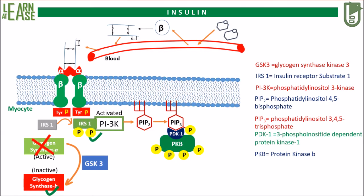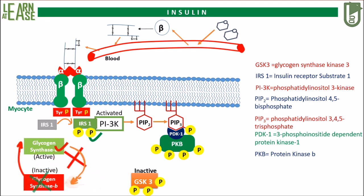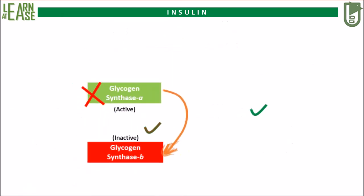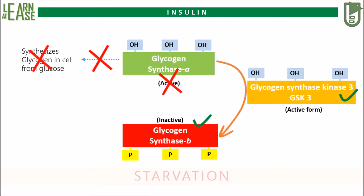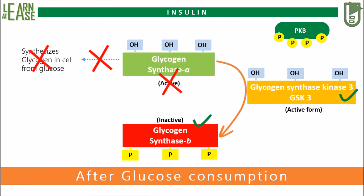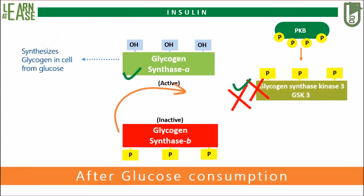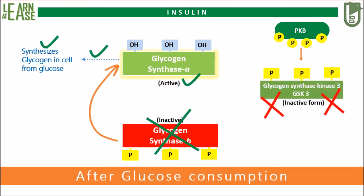Activated protein kinase B will phosphorylate GSK3 and inactivate it. After glucose consumption, protein kinase B, activated by insulin signaling, phosphorylates the serine and threonine residues of GSK3, rendering it inactive. In the meantime, the serine and threonine residues of inactive glycogen synthase will self-dephosphorylate, and slowly glycogen synthase will become activated.